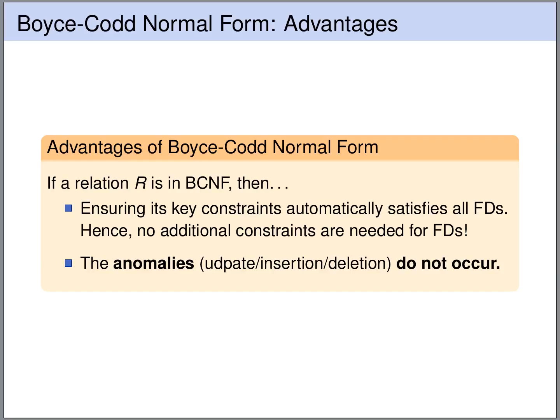If a relation R is in Boyce-Codd normal form, then enforcing the key constraints automatically satisfies all functional dependencies, so we do not need additional constraints to ensure integrity with respect to functional dependencies. Also, if a relation is in Boyce-Codd normal form, then the anomalies we've discussed — the update, insertion, and deletion anomalies — do not occur.